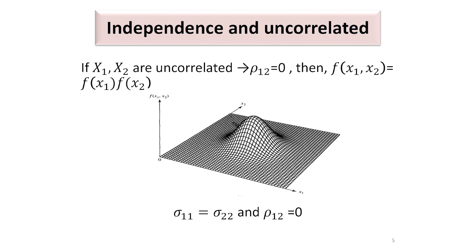This picture gives the diagram of f(x1, x2) against x1 and x2. When x1 and x2 are uncorrelated, the correlation coefficient rho_12 is 0. In that case, we can write the joint density f(x1, x2) in terms of the product of the marginal densities f1(x1) and f2(x2). This product form indicates that x1 and x2 are independent. So this is the only situation where two variables being uncorrelated means they are independent.